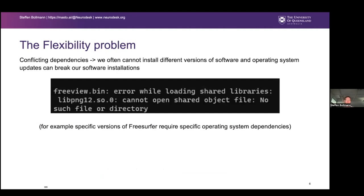The second problem is the flexibility problem. Our software has dependencies — for example, FreeSurfer's FreeView needs libpng12.so.0. When we update our operating system, these dependencies can disappear when Ubuntu decides to deprecate libpng12. This actually happened to me. You can't run your old FreeView anymore, you need to upgrade or keep your OS frozen. If you just want to keep doing your work, you end up spending a lot of time maintaining things you shouldn't have to.